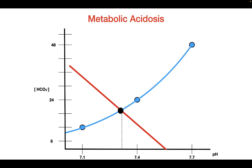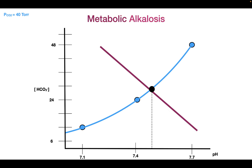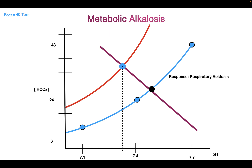What if you have a metabolic acidosis? The body is going to respond with a respiratory alkalosis, as we see right here, and the pH is now closer to that 7.4 range. And the last one is a metabolic alkalosis — if you have a metabolic alkalosis, the body is going to respond with a respiratory acidosis, and this would bring the pH closer to that 7.4 value.